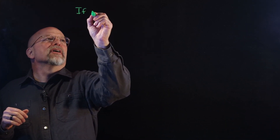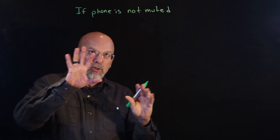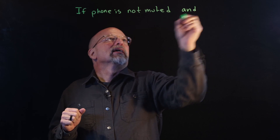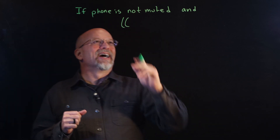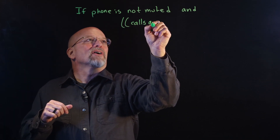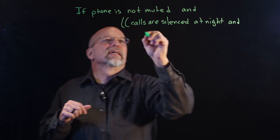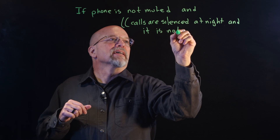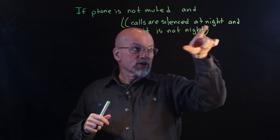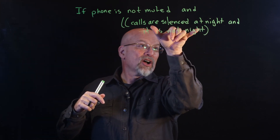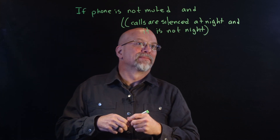So what I've got is: if a phone is not muted — that was one of the requirements — and calls are silenced at night, and it is not night, then those conditions define when we ring. So if it happens not at night and calls are silenced at night, we can ring the phone.